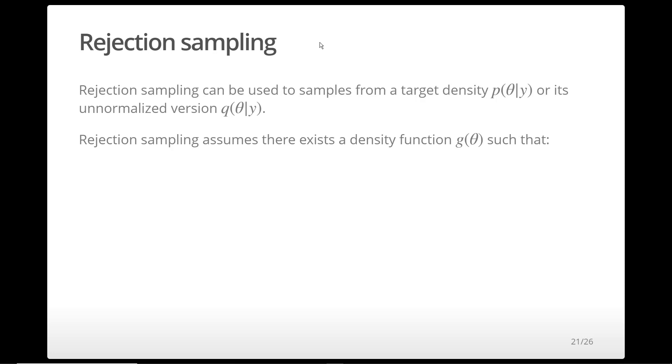Rejection sampling is a popular stochastic method for approximating a posterior distribution. It can be used to draw a sample from a target density p or its unnormalized version q.